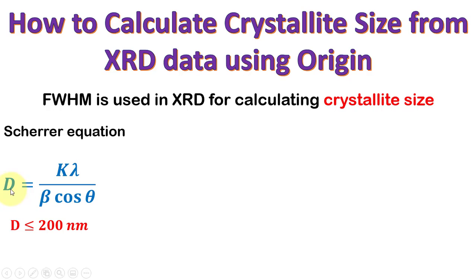In the Scherrer equation, D is the crystallite size which is usually calculated from the most intense peak in the XRD pattern. However, calculation from one peak is not suitable. We will calculate the average crystallite size from all peaks and then average those crystallite sizes.